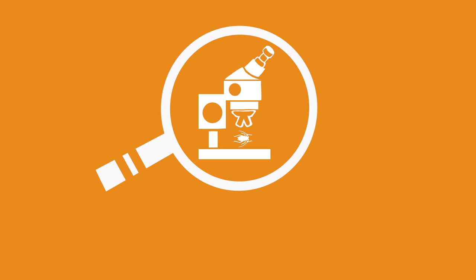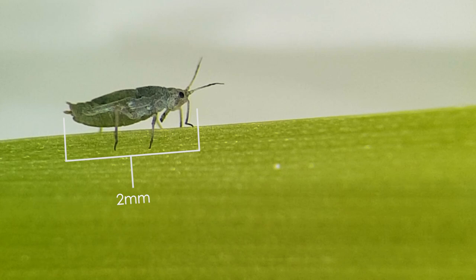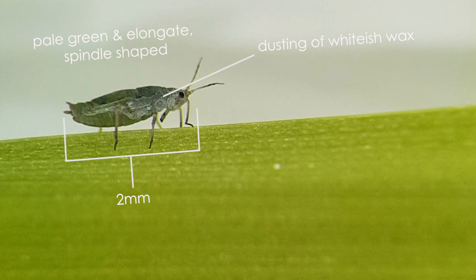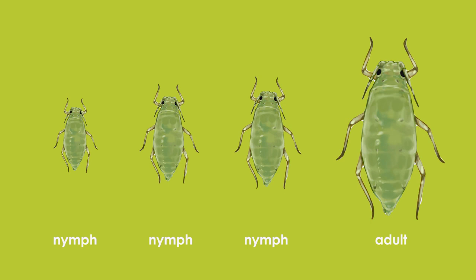Wingless Russian wheat aphid are up to two millimetres in length, pale green in colour, elongate and spindle shaped, often with a fine dusting of whitish wax. Russian wheat aphid nymphs look like wingless adults but are smaller.